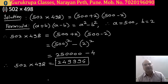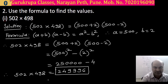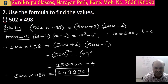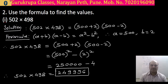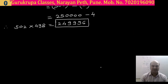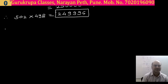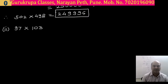That is the product of the given numbers. This is our final answer — please write down this answer properly. Going to the next sum: 97 multiplied by 103.